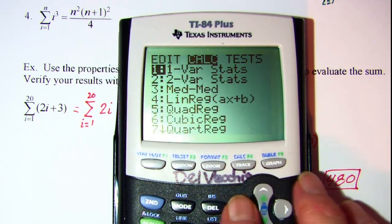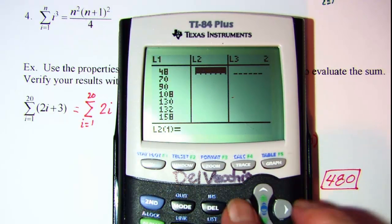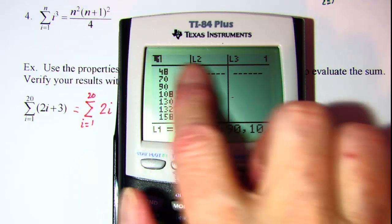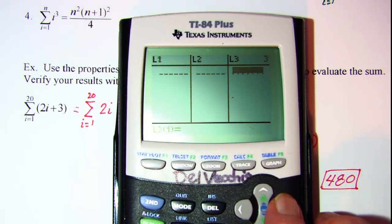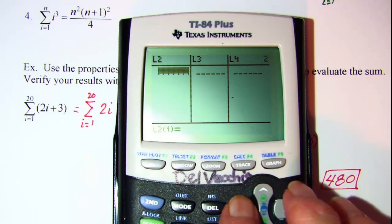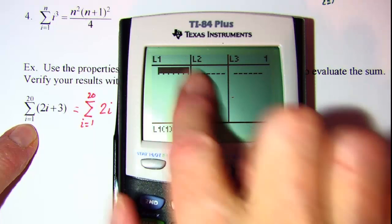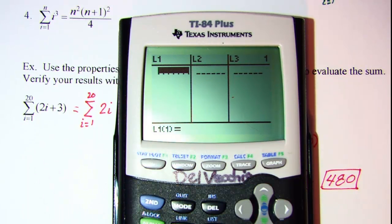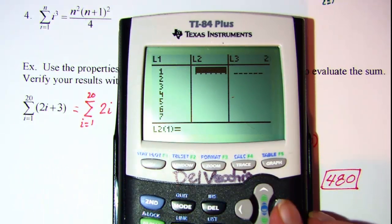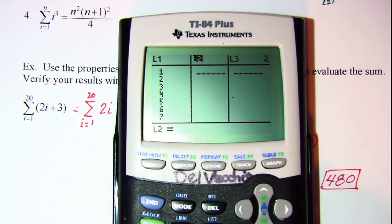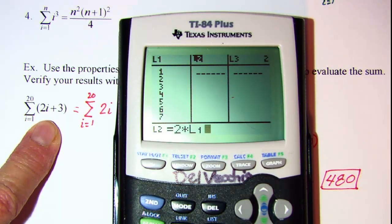I'm going to go ahead and use the stats button where we need to edit. If there's anything in the lists we need to clear those out. So you sit on top of the L1 or L2 wherever your numbers are and press the clear button and press enter and make sure all of my lists are clean. And then my i I'm going to enter L1, there's a quick way to do it but I'm just going to go ahead and enter the numbers 1 through 20. And then in L2 I'm going to sit on top of the L2 button and enter my formula which is 2 times L1 plus 3.